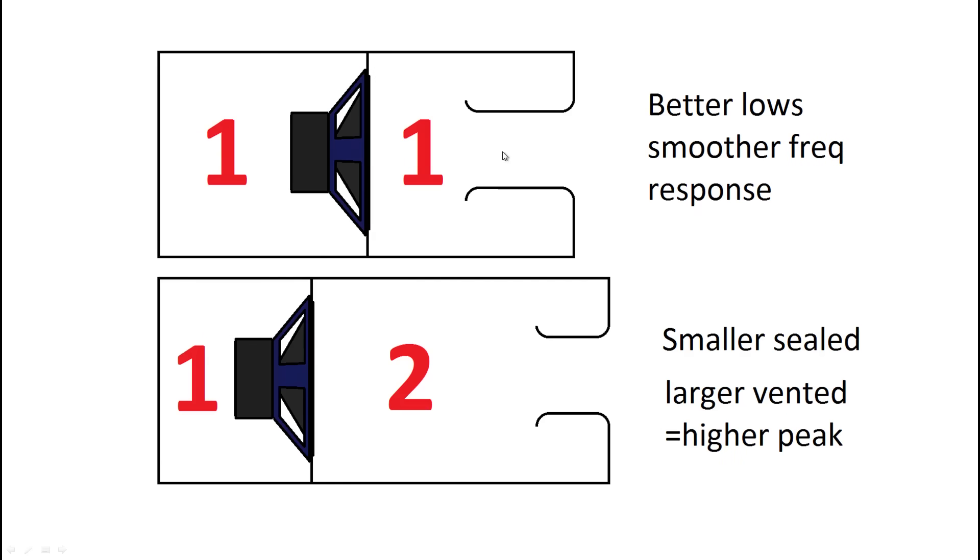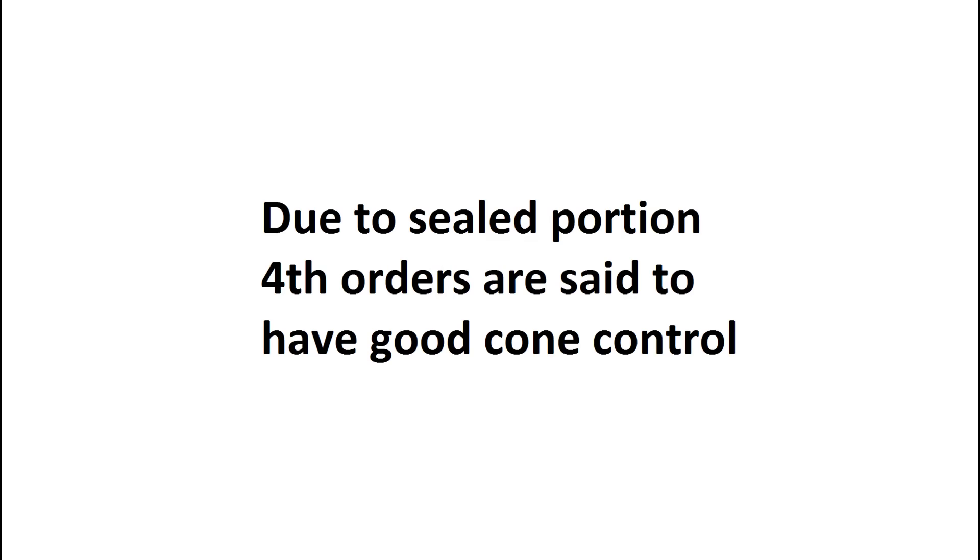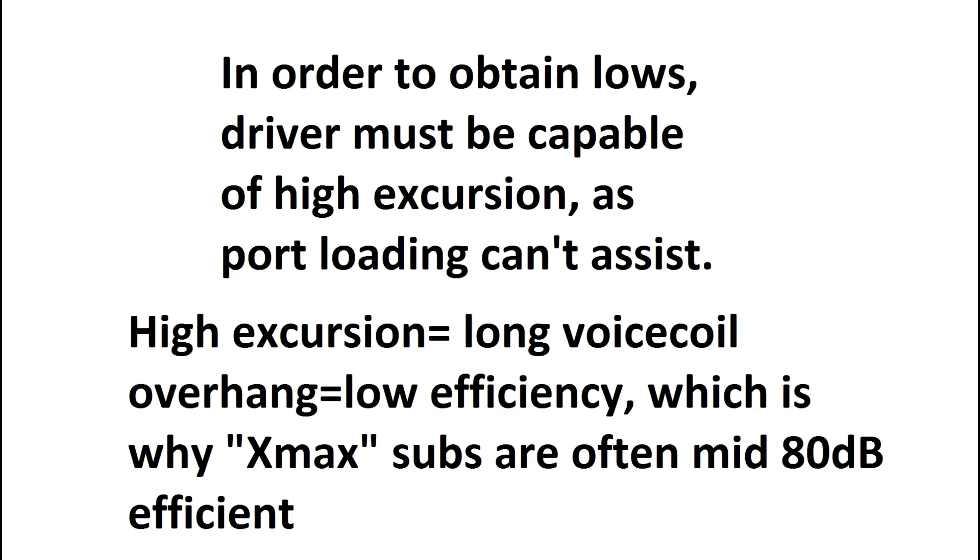This one just here the one to one is quite common. Now what this does is the smaller your box the less of a peak it's got which means you get a smoother frequency response out of a one to one. And one to two you get a bit more of a peak in the higher frequency range. And the higher the ratio the more exaggerated those effects are. But yeah due to the sealed portion fourth orders are said to have good cone control. Just like people talk about sealed boxes sounding better fourth orders are also well at least supposed to sound better. But of course that's up to the listener.